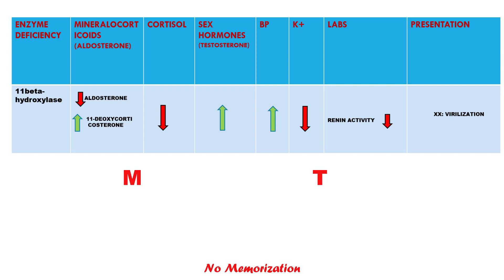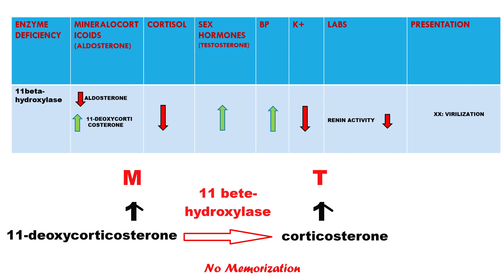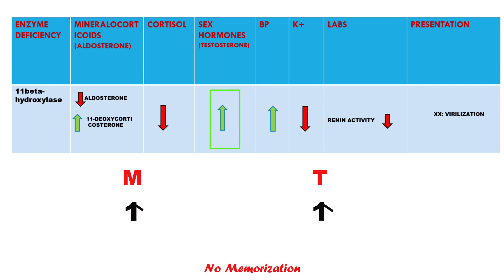Now the last one, 11-beta-hydroxylase deficiency. Here, put number 1 below both the letter M and T, then apply the same — turn number 1 into an up sign. One thing is a bit tricky: 11-beta-hydroxylase converts 11-deoxycorticosterone to corticosterone, ultimately to aldosterone. So lack of that enzyme will decrease aldosterone production. However, it will lead to an increase of 11-deoxycorticosterone, which has mineralocorticoid activity too. So ultimately it will increase blood pressure and decrease potassium. Sex hormone will go up and causes virilization in females. Renin activity will go down because of increased mineralocorticoid activity.